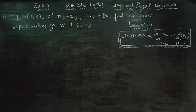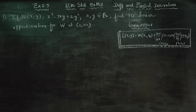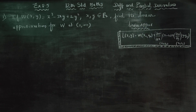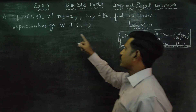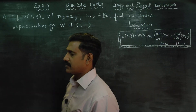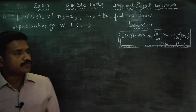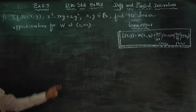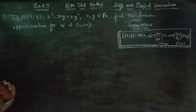Dear 12th standard students, I am Metro Karanagaran. In exercise number 8.5, sum number 1, find the linear approximation of w at (1, -1).